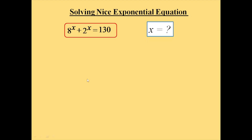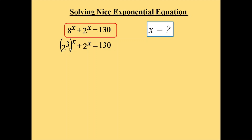Hello everyone. In this session we are going to calculate the value of x in the equation 8^x + 2^x = 130. We know that 8 can be written as 2 cubed, so we replace this 8 with 2 cubed, which will become (2³)^x + 2^x = 130.